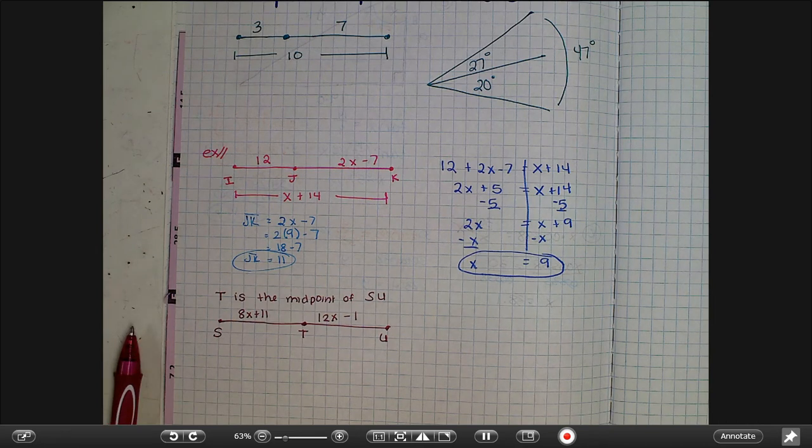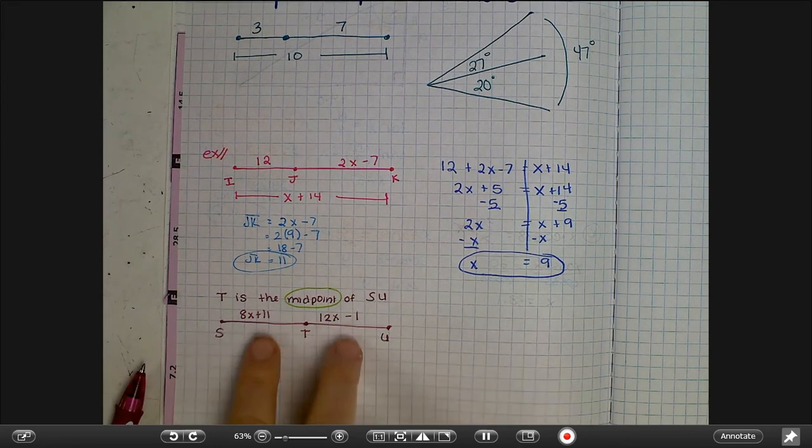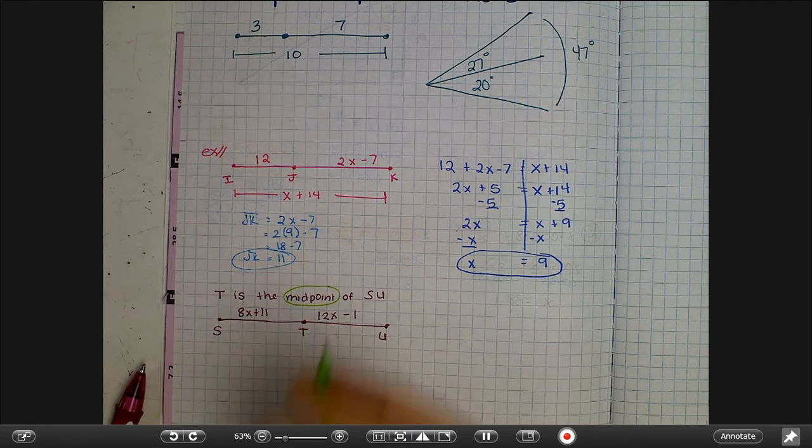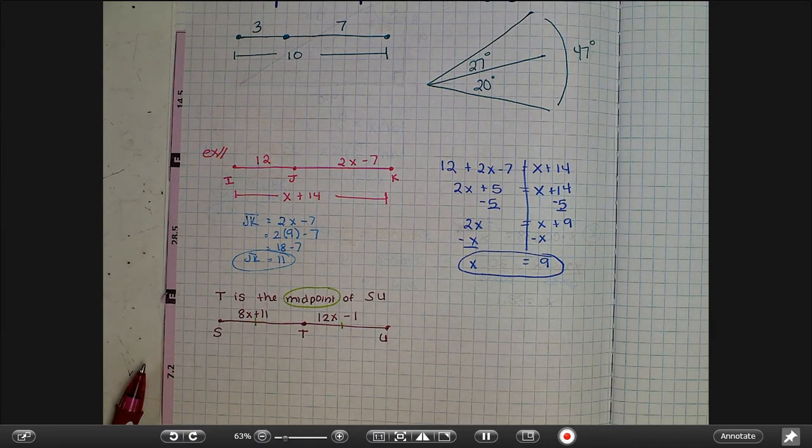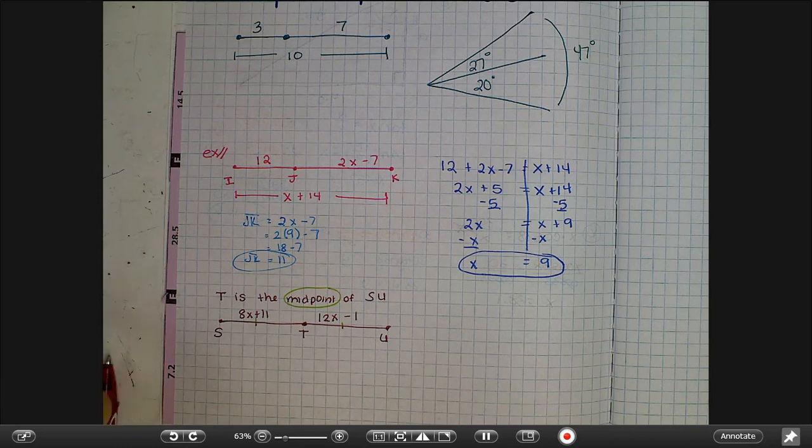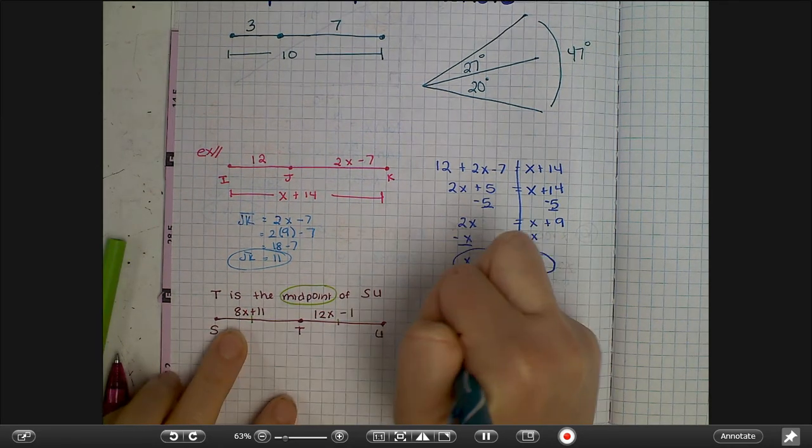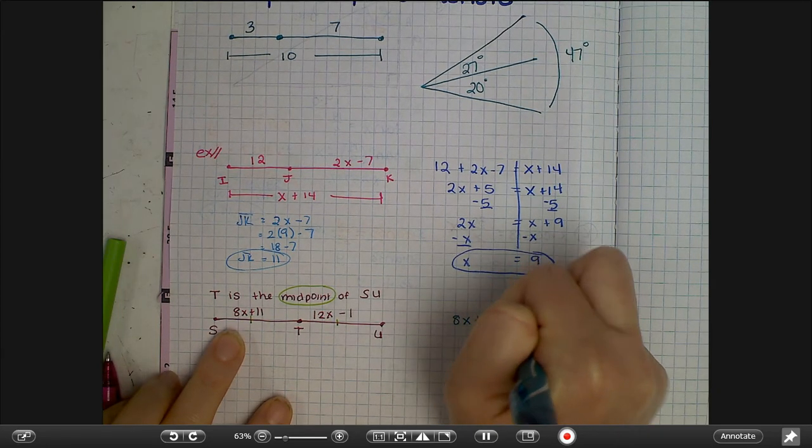But the word midpoint is important because that tells us that T is in the middle. And if something is in the middle, what does that mean about the two pieces that are on either side? It means they are congruent. And in geometry, congruent means equal or same size, same shape. So for this one, if it's the midpoint and we know that those are equal, your equation will reflect that: 8x plus 11 is equal to 12x minus 1.